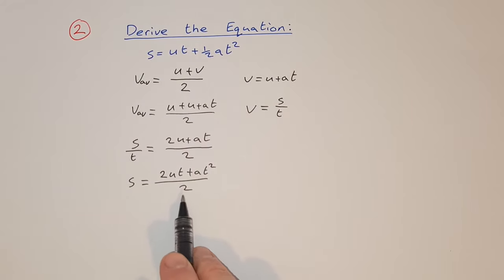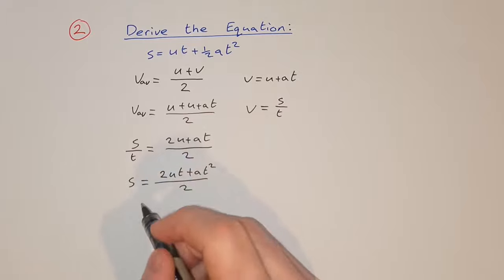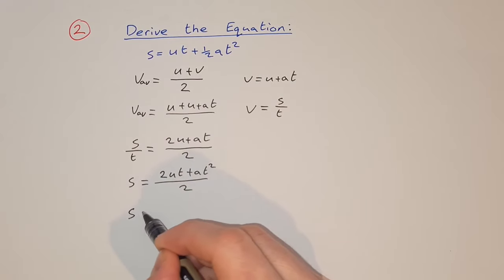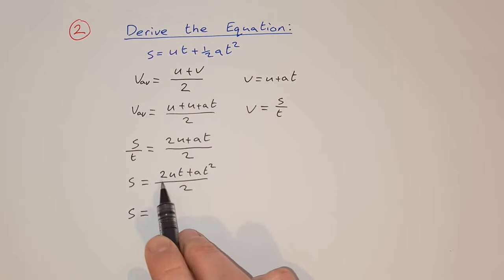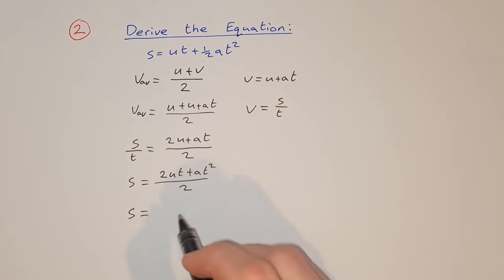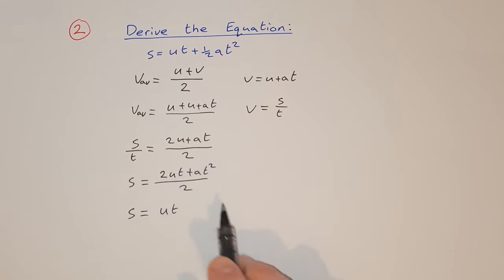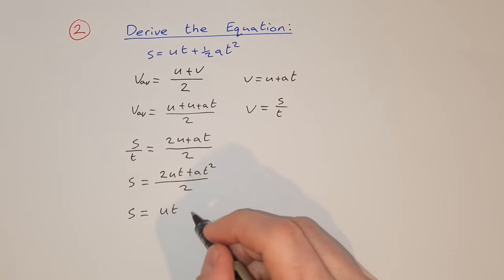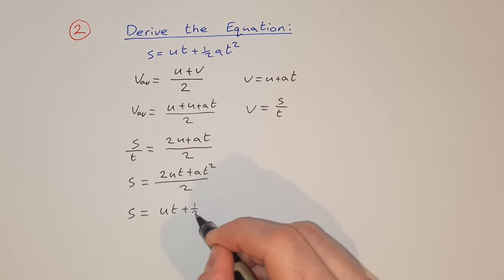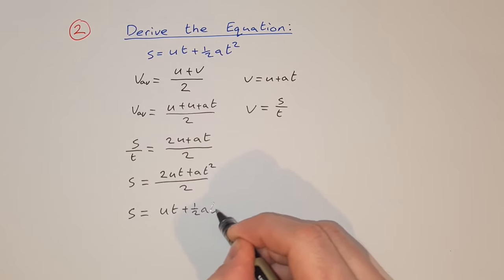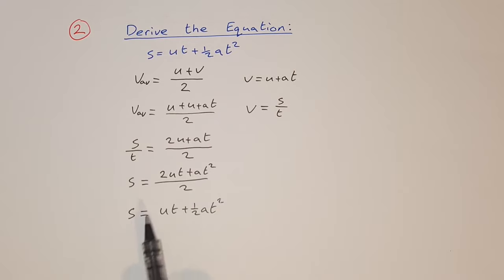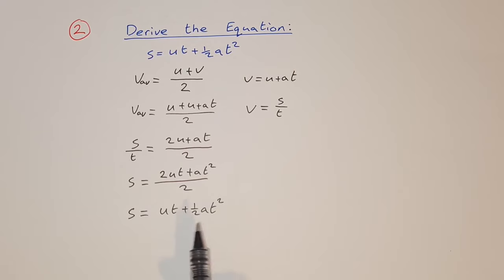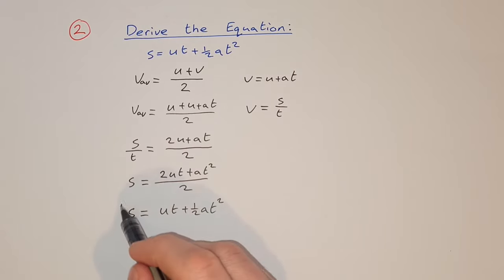On the right hand side, we divide the 2 in, so we get 2ut/2 = ut, and at²/2 = ½at². So s = ut + ½at², which is what we were looking for.